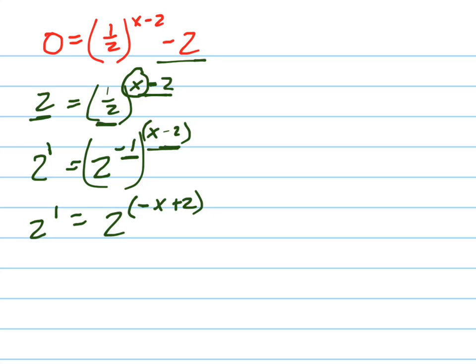So now if I have 2 to the 1 equals 2 to the negative x plus 2, what can I say about the 1 and the negative x plus 2? They're equal. So 1 equals negative x plus 2, which means negative x equals negative 1, which means x equals 1.